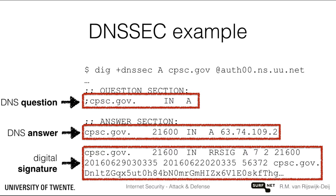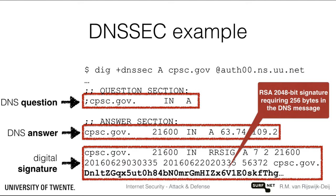We have removed most of the signature from the example, as the signature is very large and would fill up a significant proportion of the slide. In this particular case, the signature is an RSA 2048-bit signature that requires 256 bytes of space in the DNS message.